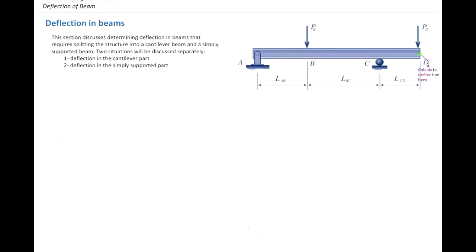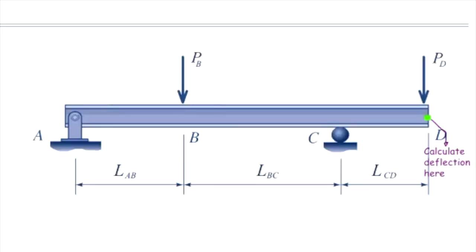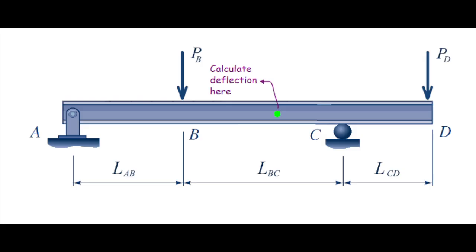In general, this algorithm can be used for determining deflections in beams that require splitting the structure into a cantilever beam and a simply supported beam. We usually deal with two situations: the first is determining deflection in the cantilever part, and the second is determining deflection in the simply supported part.